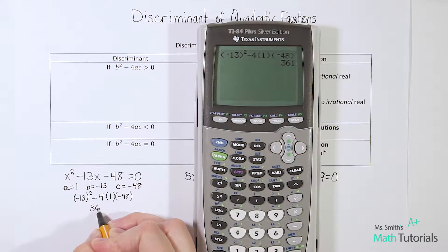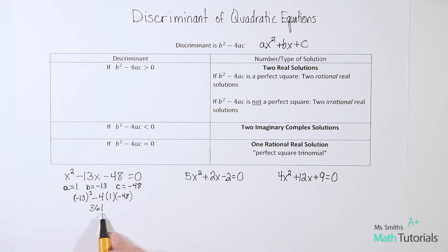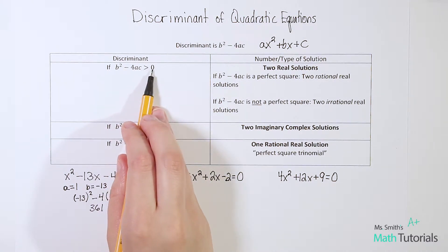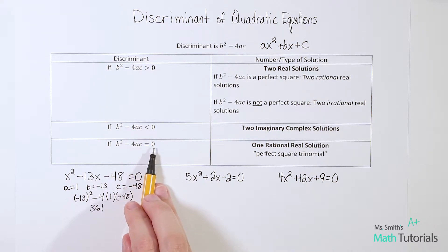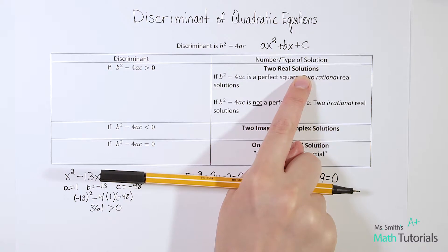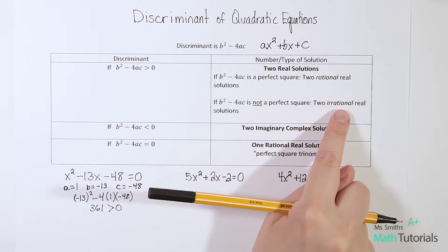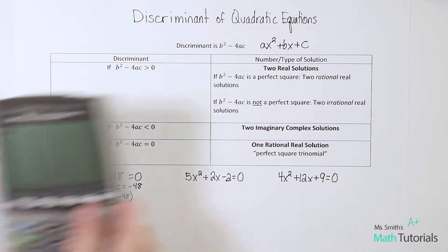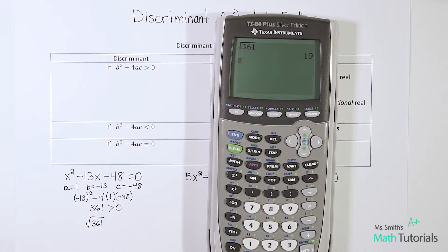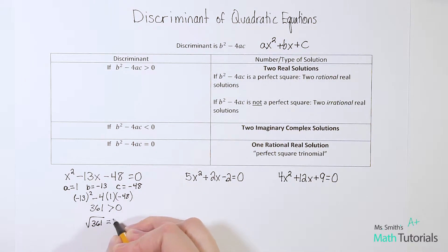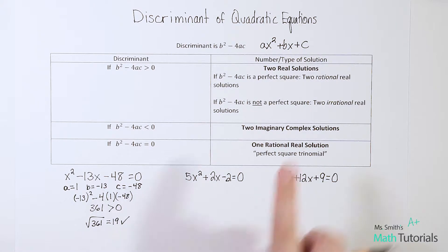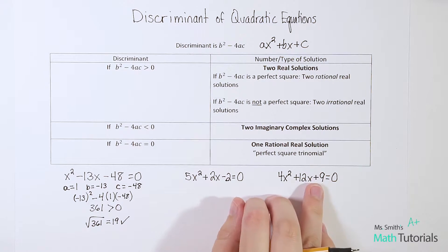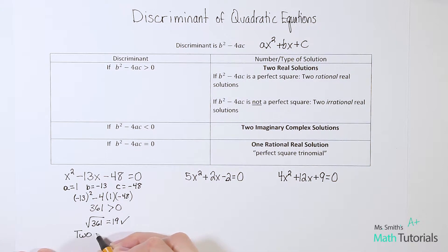The discriminant is 361. Is 361 greater than zero, less than zero, or equal to zero? It's definitely greater than zero, so we have two real solutions — but we need to be more specific. Are they rational or irrational? We ask: is 361 a perfect square? Taking the square root of 361 gives us 19, a whole number. Because it is a perfect square, we have two rational real solutions.